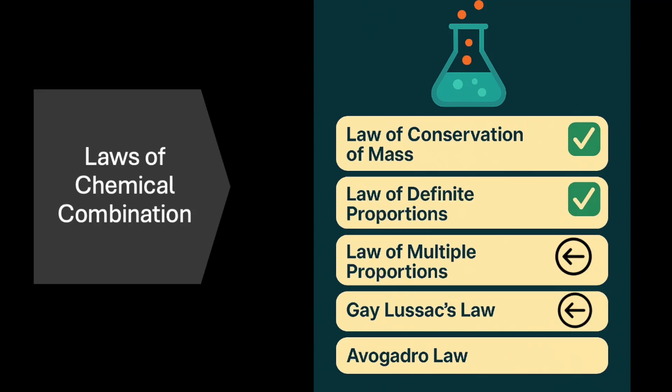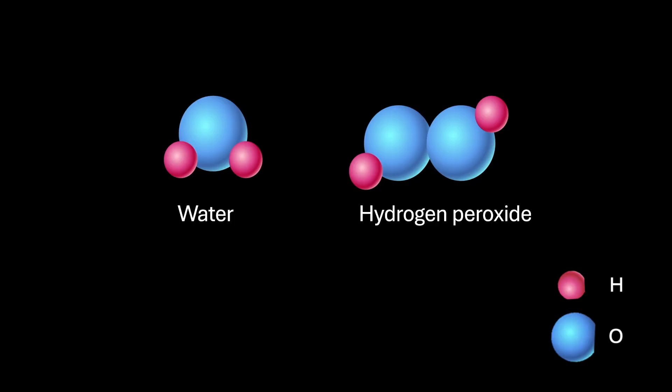In the previous videos, we have seen the law of conservation of mass and law of definite proportions. Let's now dive further. Let's consider the formation of two compounds: water and hydrogen peroxide.